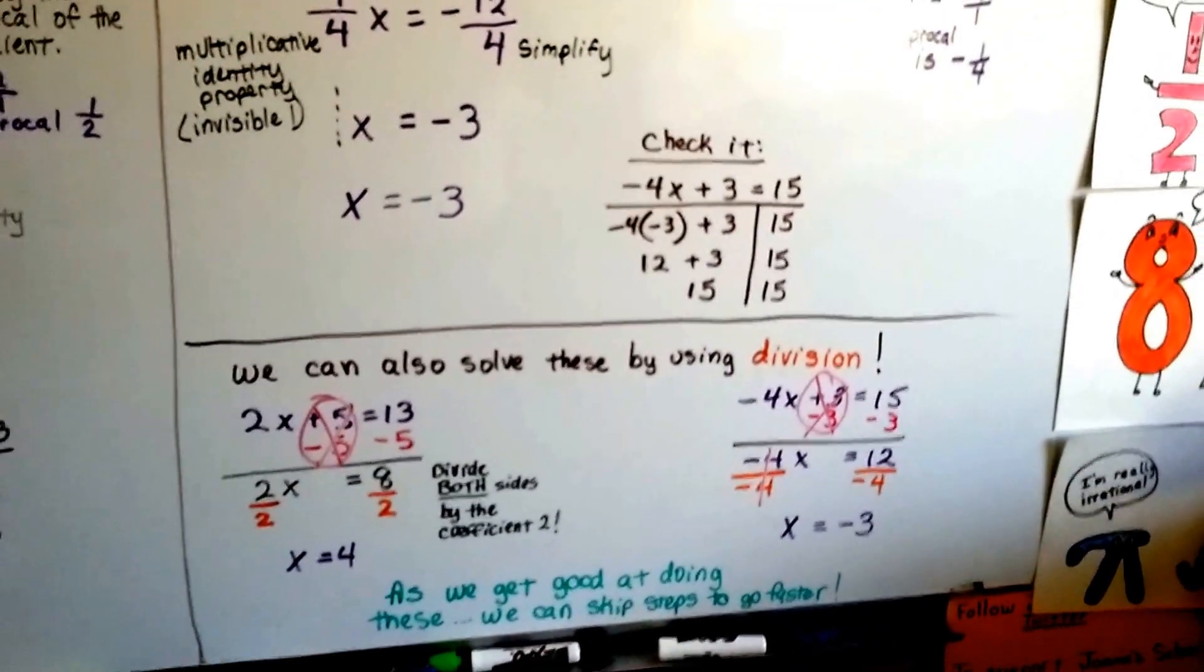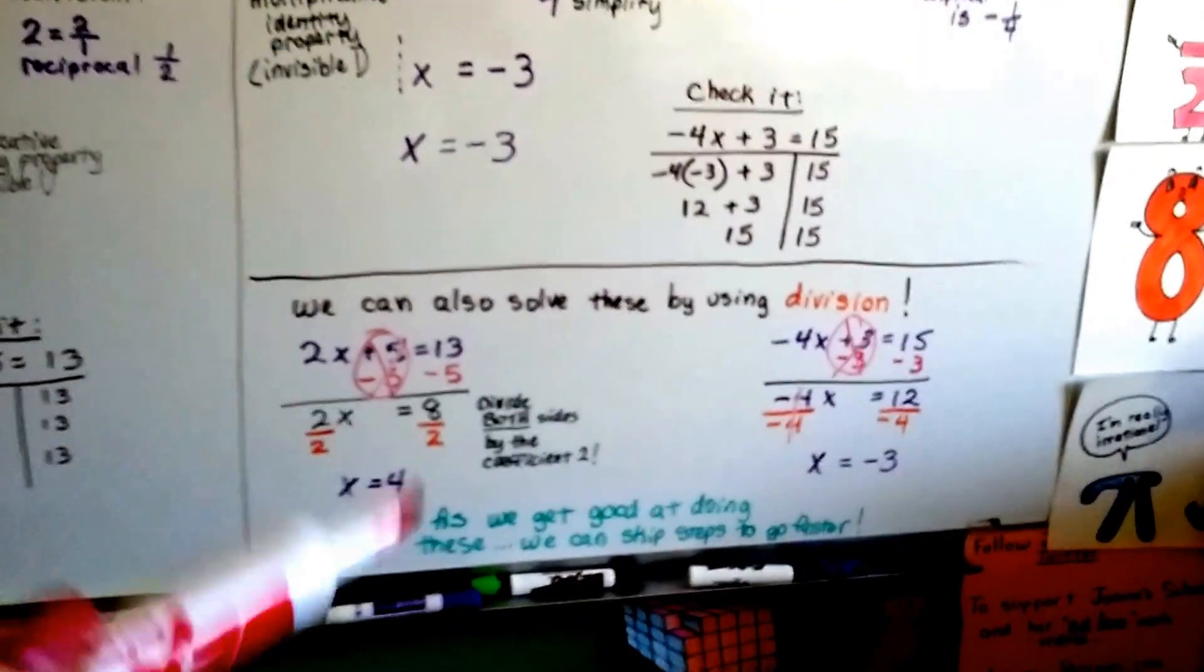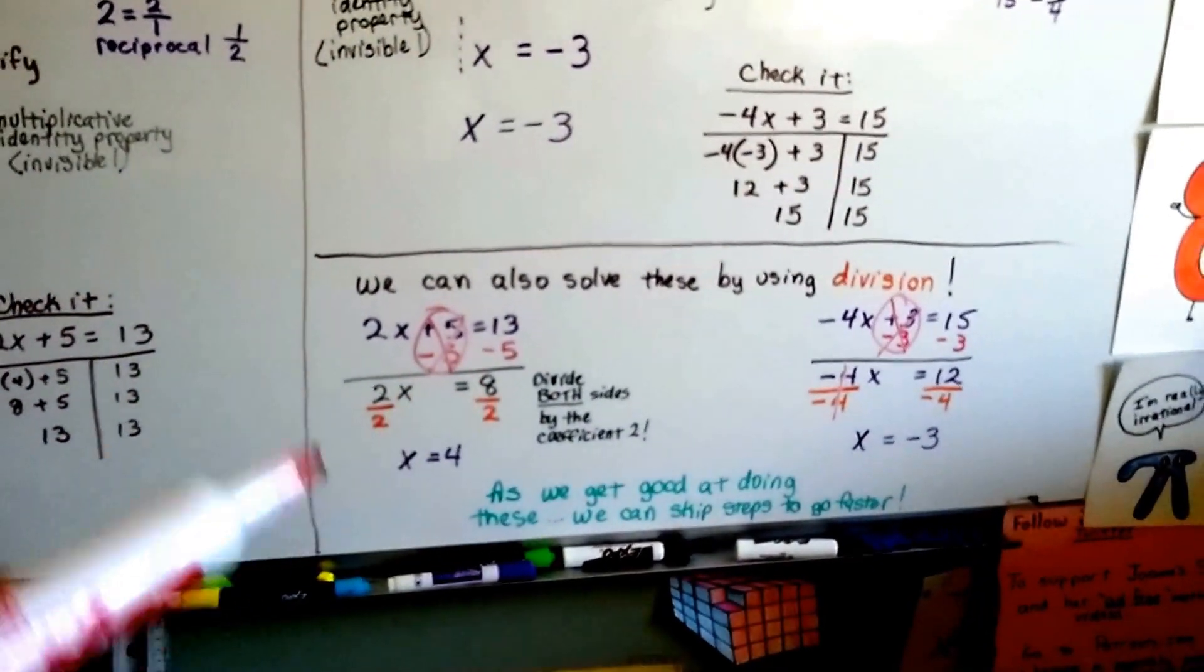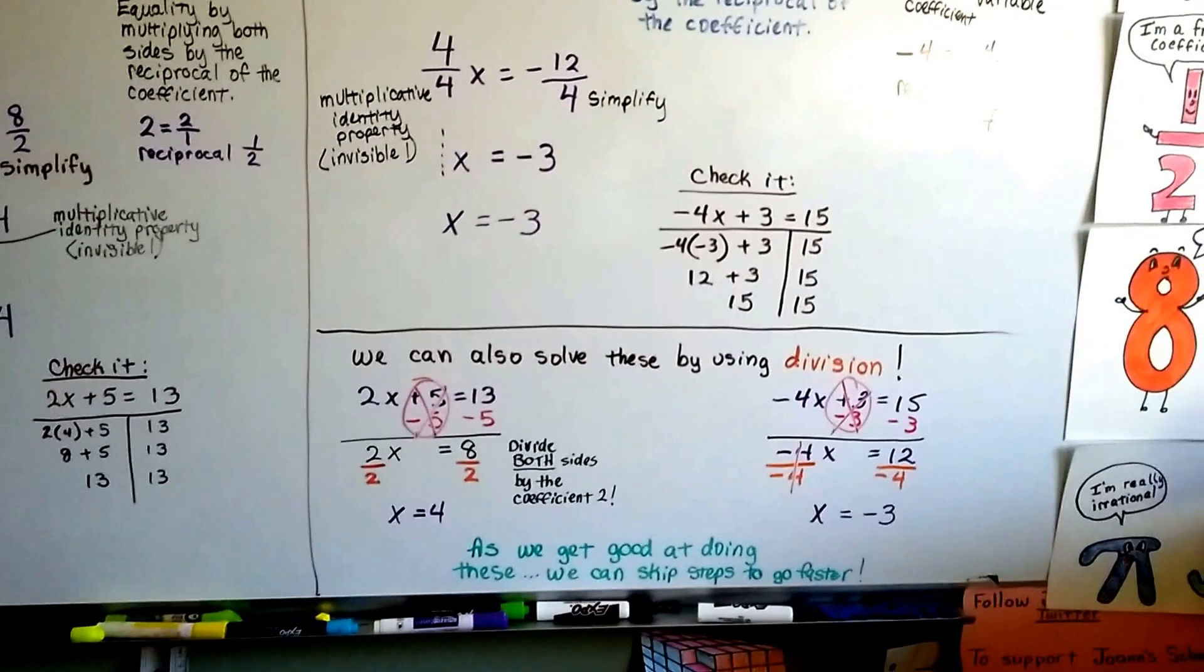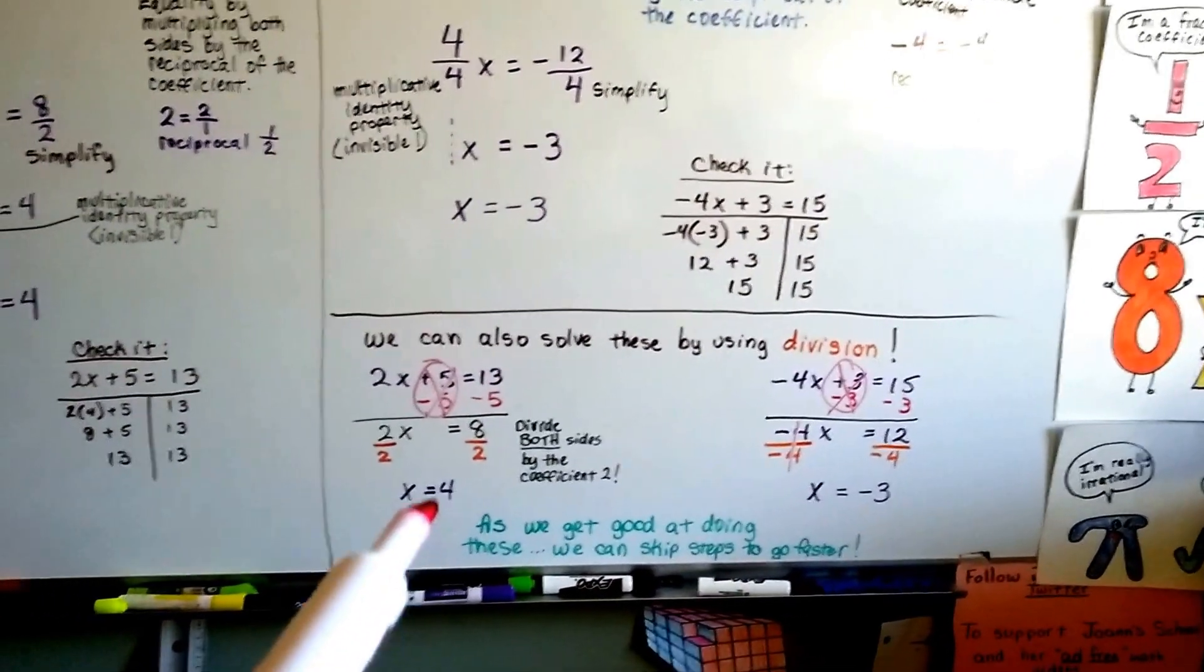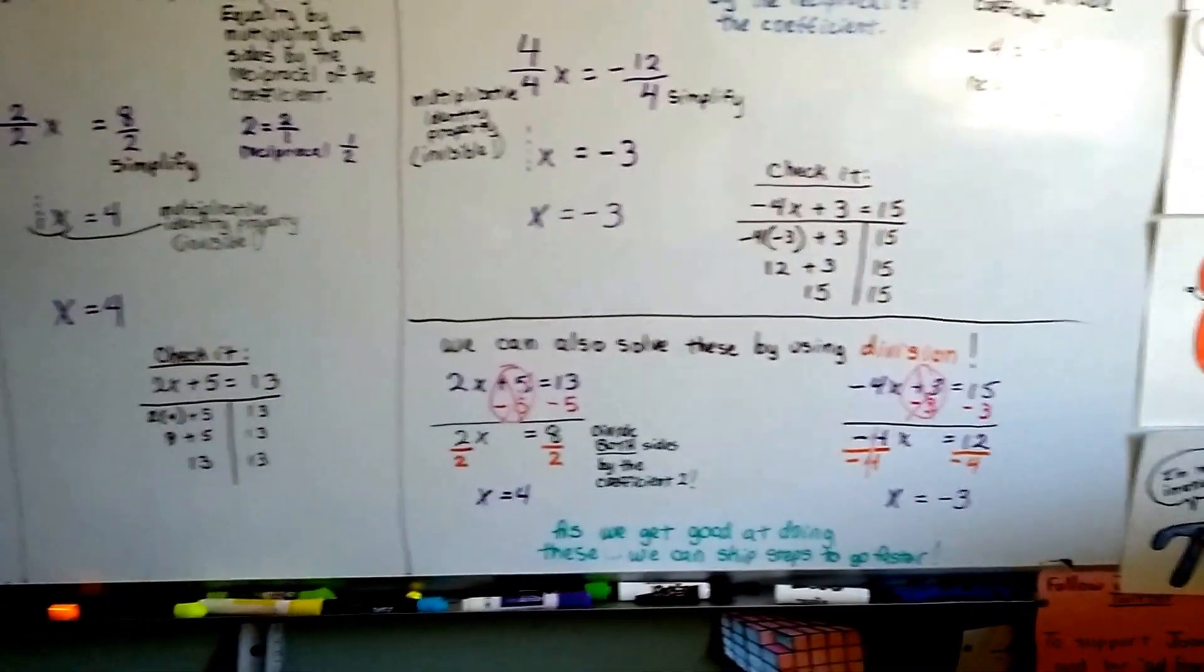So division can help us skip a couple steps, but make sure you know what you're doing. If you're trying to skip steps when you're still not quite sure what you're doing, you can make a mistake. That's why I said, as we get good at doing these, we can skip steps.